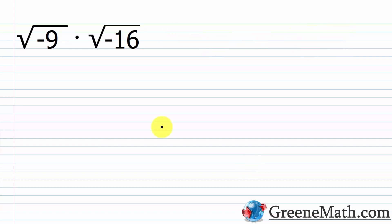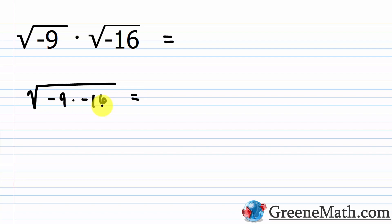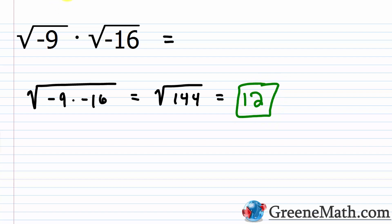Let's look at a trap question: the square root of negative 9 times the square root of negative 16. Many people would apply the product rule for radicals, combining the radicands under one square root: negative 9 times negative 16 equals 144, giving the square root of 144, which equals 12. But this is absolutely wrong. The product rule for radicals cannot be used when both radicands are negative. It works with two positive radicands — that would give square root of 144, which is 12, and that would be correct — or with one negative and one positive, but not with two negatives.